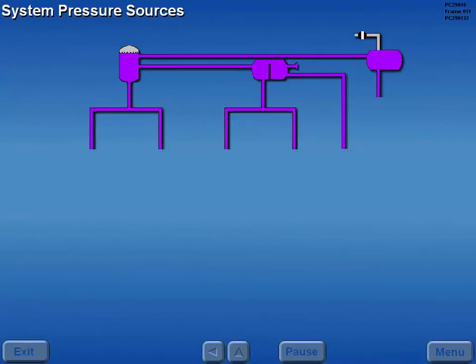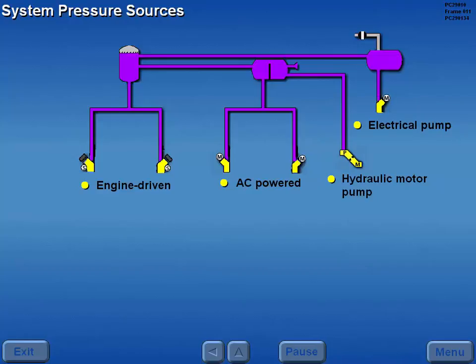System A operating pressure is supplied by engine-driven pumps located on the number one and two engines. System B pressure is provided by two AC-powered electrical pumps, and standby system pressure is provided by an electrical pump and a hydraulic motor pump.